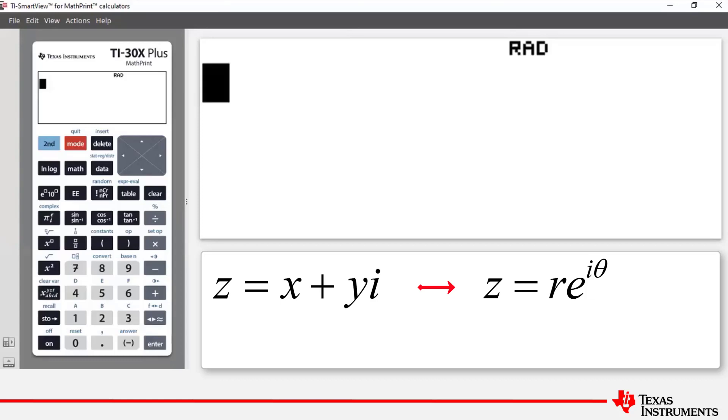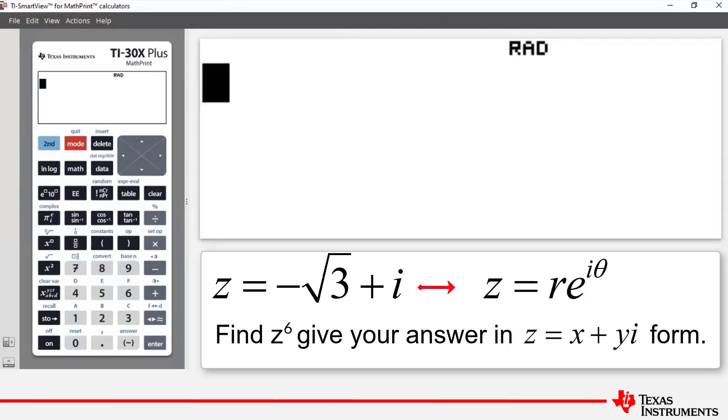Our example is the following. We'll let z equal negative root 3 plus i. Part a asks us to write z in modulus argument form and part b asks us to find z to the power of 6, giving our answer in the form x plus iy where x and y are elements of the reals, in other words, real numbers.